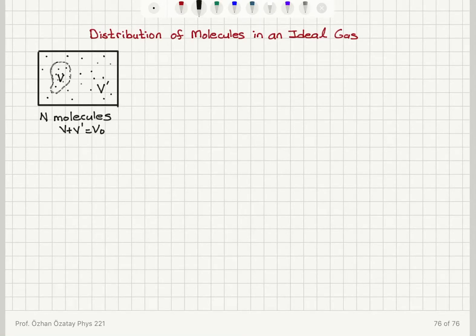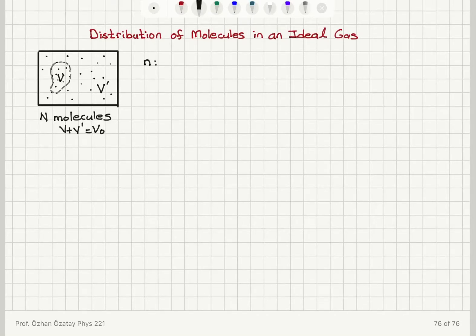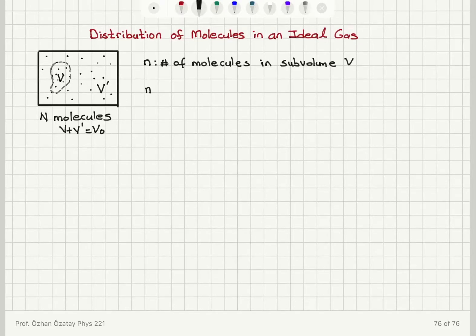We're going to look at the problem of distribution of molecules in an ideal gas. Assume we have capital N molecules inside an isolated container. There is a sub-volume V and sub-volume V', such that the total volume is V0. I call N the number of molecules in sub-volume V, and N' the number of molecules in sub-volume V', so that N plus N' equals capital N.